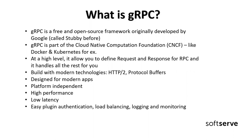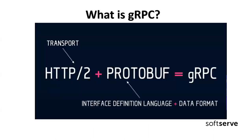At the core of a gRPC API is a contract. At the high level, it allows you to define request and response, and everything else is handled by the framework. It will build client and service, and you just implement your business functions. It is platform-independent, shows good performance and low latency, and it is very easy to plug in authentication and monitoring. In a few words: gRPC uses HTTP/2 at the transport level, and Protocol Buffers as the interface definition language plus data format.